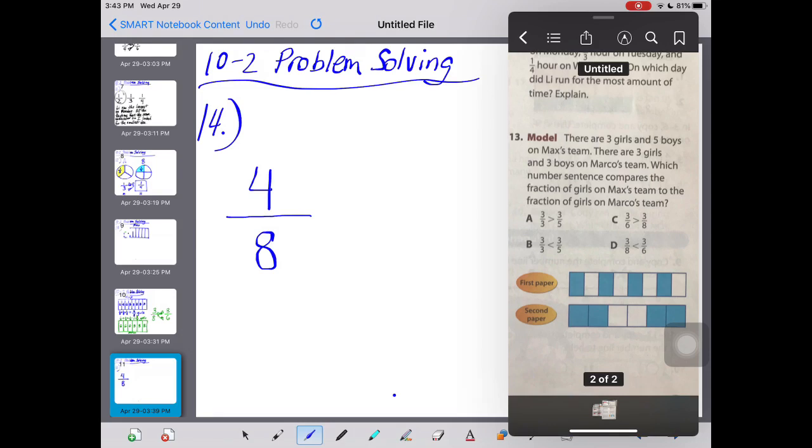Now let's take a look at the second paper and count how many parts there are. One, two, three, four, five, six. Six equal sections. So I'll do my fraction bar, and my denominator will be six for six equal sections. And of course you did one, two, three, four blue, four sixths.